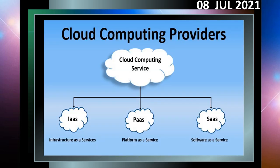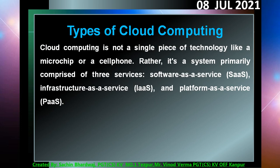With this background, let us see the types of cloud computing services or cloud service providers. Cloud computing is not a single piece of technology like a microchip or a cell phone. Rather, it is a system primarily comprised of three services: number one, SaaS — Software as a Service; number two, IaaS — Infrastructure as a Service; and number three, PaaS — Platform as a Service.